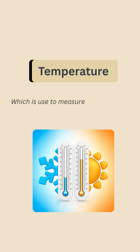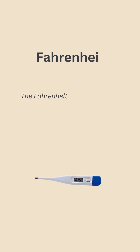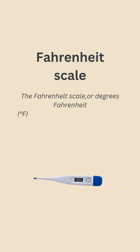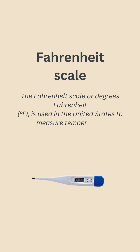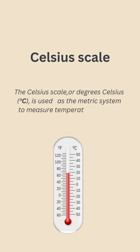Next is temperature, which is used to measure how hot or cold an object is. The Fahrenheit scale, or degrees Fahrenheit, is used in the United States to measure temperature. The other unit is the Celsius scale, or degrees Celsius, which is used as the metric system to measure temperature in many parts of the world.